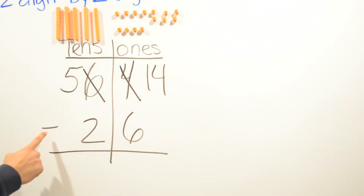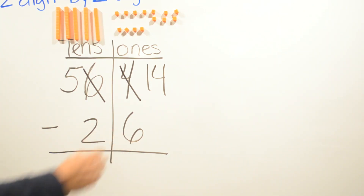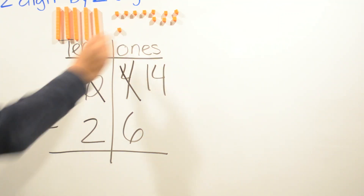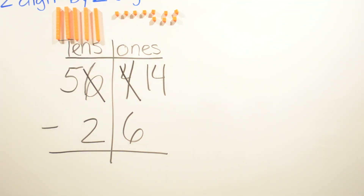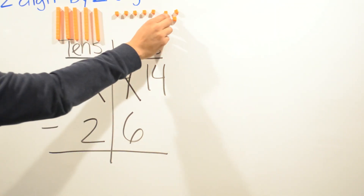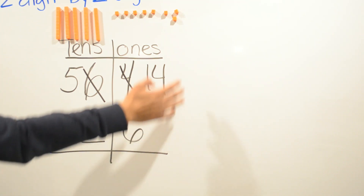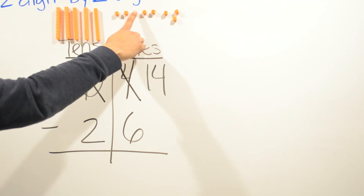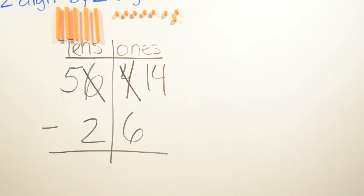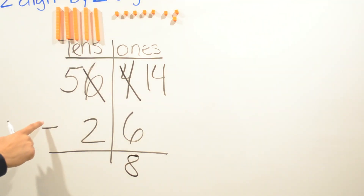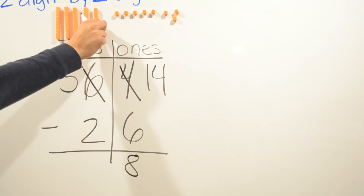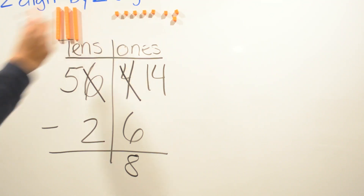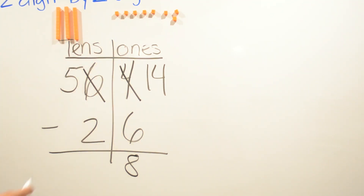Now we're gonna subtract 14 minus 6. So we're gonna take away six ones: one, two, three, four, five, and six. Now we count how many ones we have left: one, two, three, four, five, six, seven, eight. And now we subtract five minus two — we take away two tens — so now we have three tens.